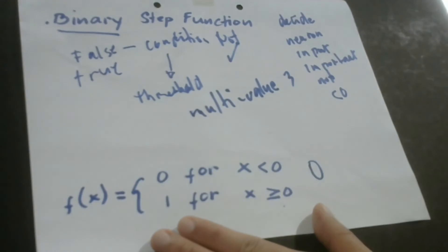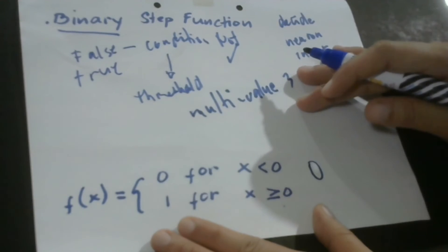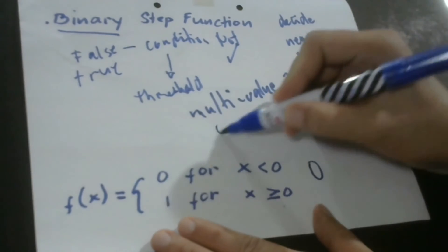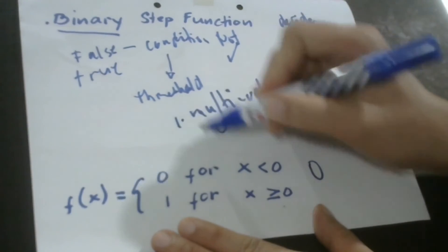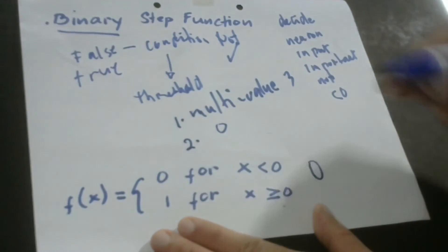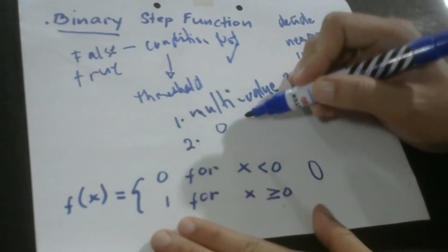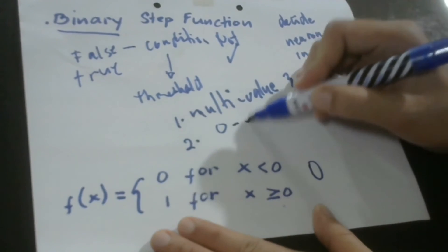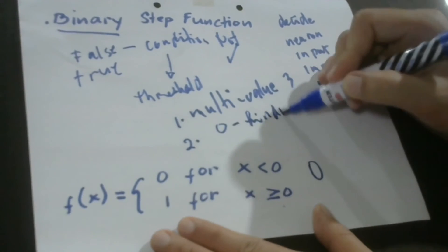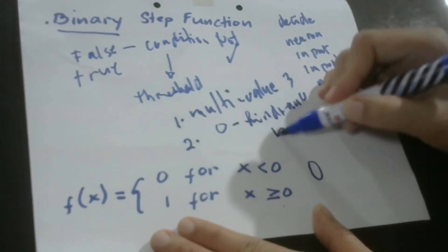Another thing is that the gradient of the step function is 0. Number two, again, the gradient of the step function is 0. And because the value is 0, it causes a hindrance. There's actually a problem in the backpropagation process.